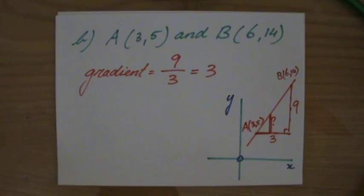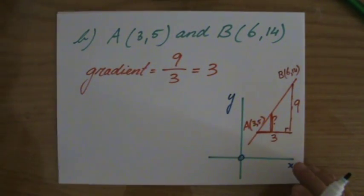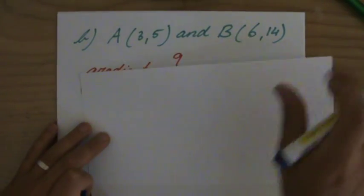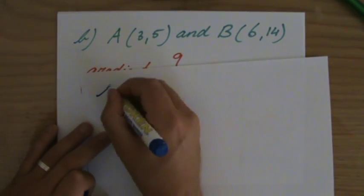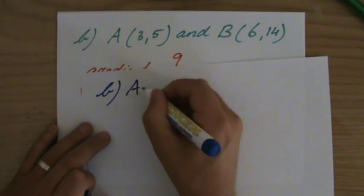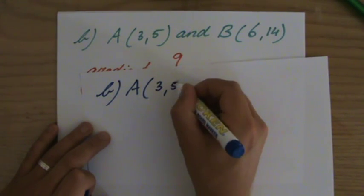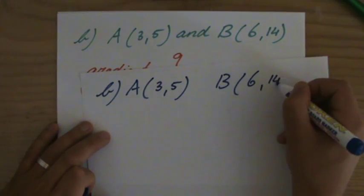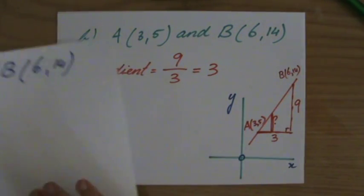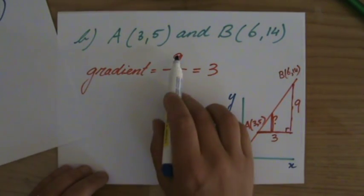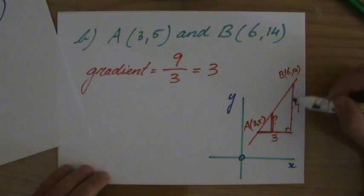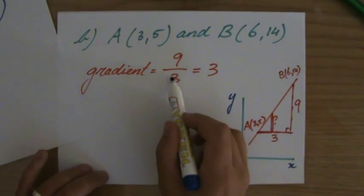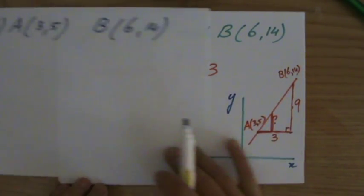But if you don't want to graph or sketch these graphs all the time, you don't have to soon. I'll show you how to properly calculate it. Let's just copy that question. 3, 5, and B is 6, 14. Now you have seen that the gradient basically are the amount of steps vertically divided by the amount of steps horizontally.